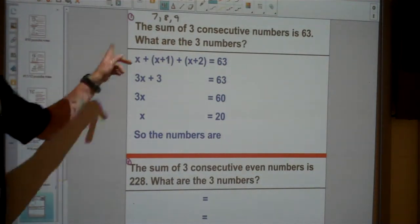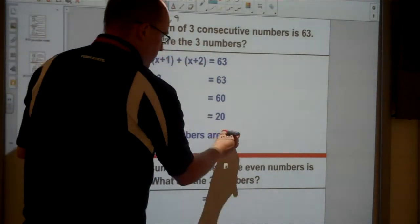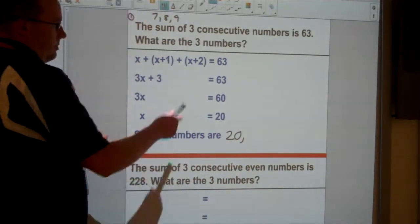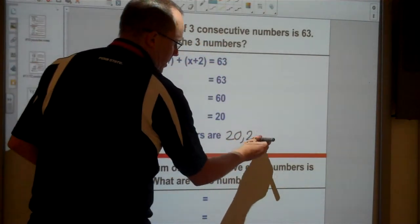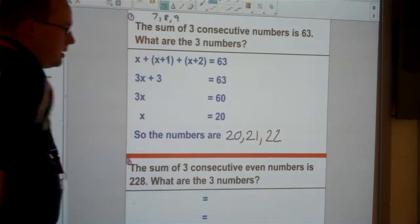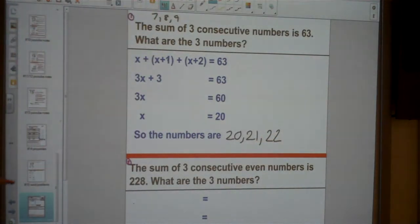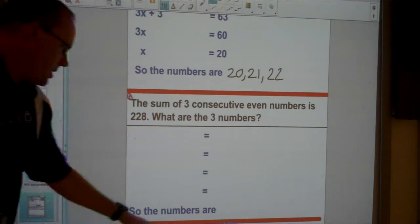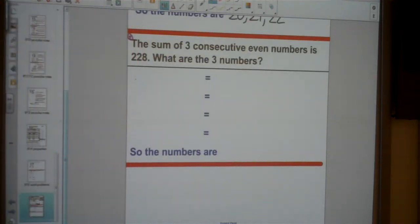Now when you finish, make sure you answer the question though. So what are the three numbers? Well, one of them is 20. And now remember this says consecutive numbers. So the next one will be 21. And the next one should be 22. And then go ahead and check. If you add those numbers together, do you get 63? And indeed you do.